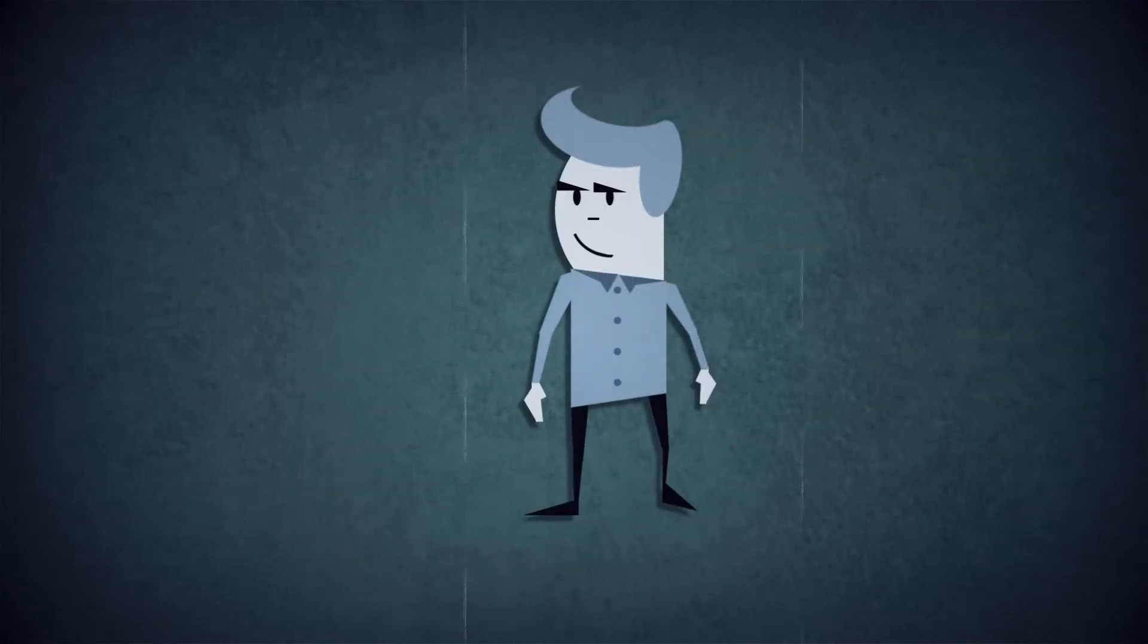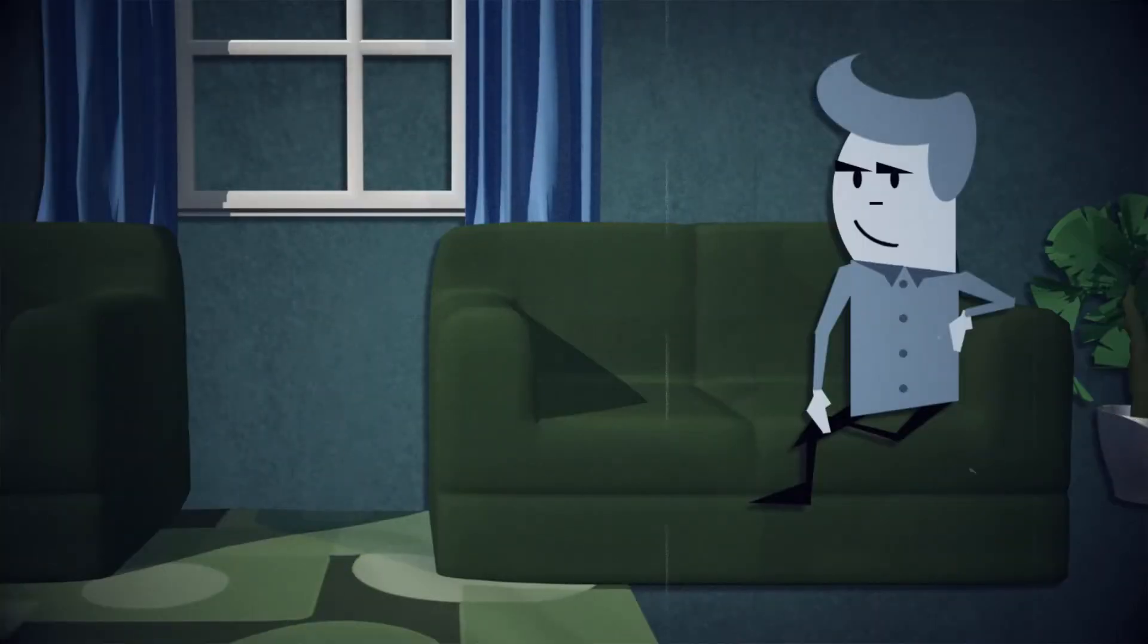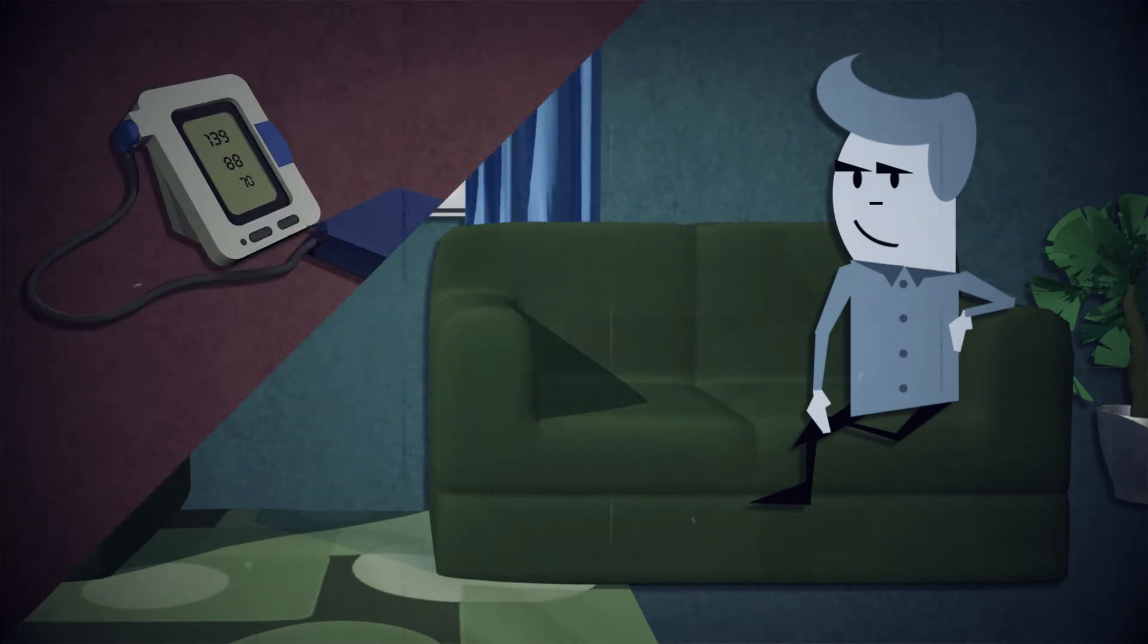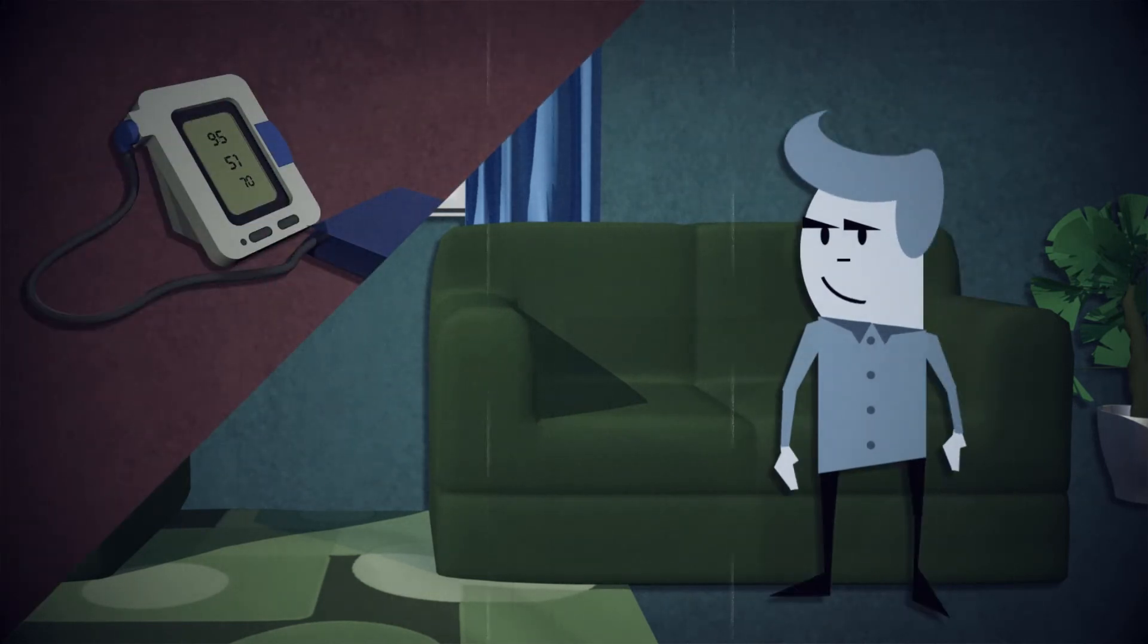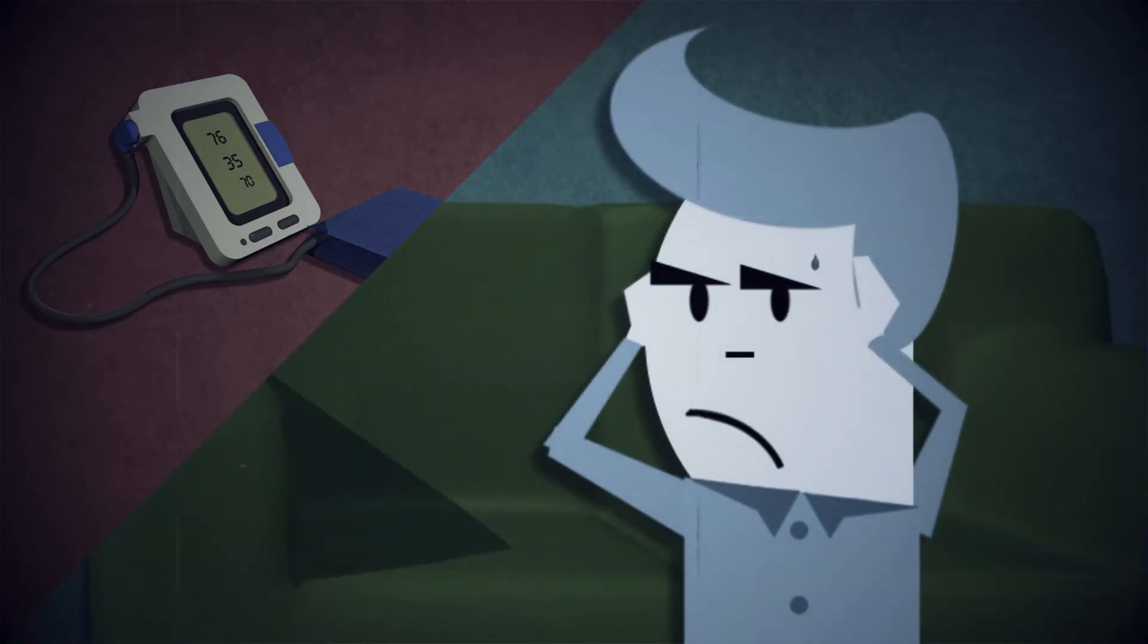The patient may also have suspected pheochromocytoma, which is a tumour of the adrenal glands, as well as labile or postural hypotension, where blood pressure lowers excessively when standing. They may also be experiencing headaches, palpitations, pallor, and excessive sweating, known as diaphoresis.